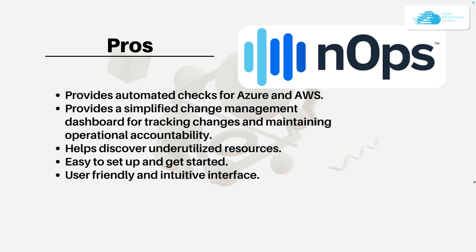Going over the pros of eNops: it provides automated checks for Azure as well as AWS, it provides a simplified change management dashboard for tracking changes and maintaining operational accountability, it helps discover underutilized resources, it is easy to set up and get started, it is very user-friendly, and it has an intuitive interface.